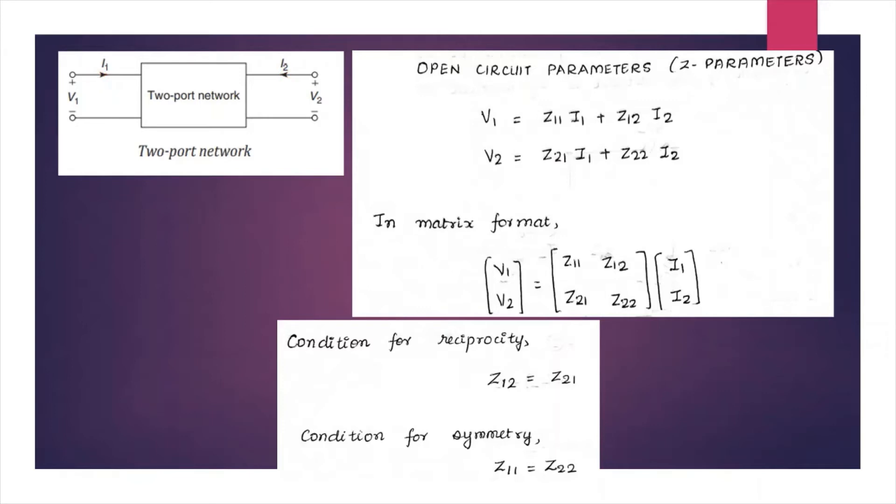The equation of the Z parameters are V1 equals Z11 I1 plus Z12 I2, and V2 equals Z21 I1 plus Z22 I2. We can write the same equation in the format of a matrix.